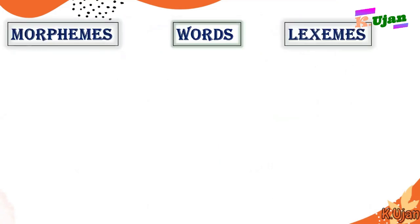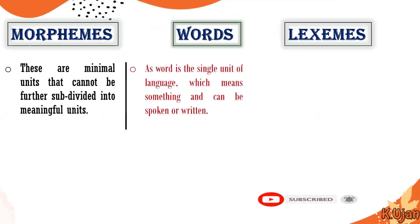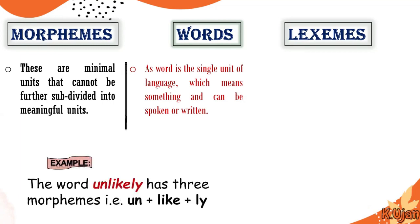One more term we are going to refer to, and that is lexemes — which are also part of morphology. Morphemes are minimal units that cannot be further subdivided into meaningful units. A word is a single unit of language which means something. The word 'unlikely' has three morphemes: 'un', 'like', and 'ly'. The morpheme 'un' cannot be subdivided because it carries grammatical function on its own. These are the morphemes.